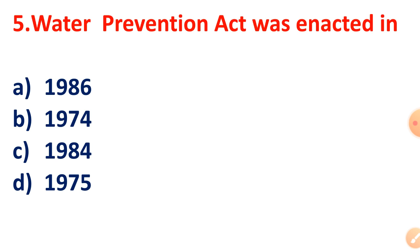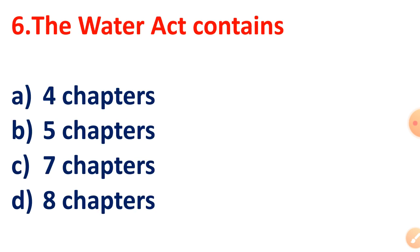Question 5: The Water Prevention Act was enacted in which year? The right answer is Option B, 1974. Question 6: The Water Act contains how many chapters? The right answer is 8 chapters.